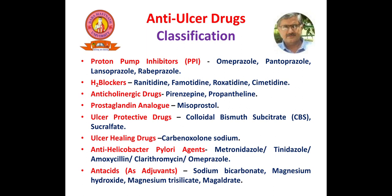The first and most widely used anti-ulcer drugs are proton pump inhibitors like omeprazole, pantoprazole, lansoprazole, and rabeprazole. The second category is H2 blockers like ranitidine, famotidine, roxatidine, and nizatidine. The third is anticholinergic drugs like pirenzepine and propantheline. The fourth category is prostaglandin analog, where the drug is misoprostol. Then we have ulcer protective drugs like colloidal bismuth subcitrate (CBS) and sucralfate. Next is ulcer healing drugs like carbenoxolone sodium.